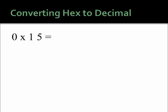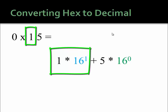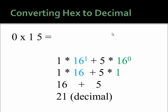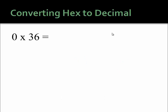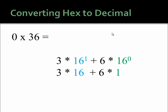Let's try another example. The hex number 15: in the ones place you have five, and in the 16s place you have one. That simplifies to one times 16 plus five times one, which is 16 plus 5, or 21. Let's do one more example. The hex number 36: in the ones place you have six, and in the 16s place you have three. That simplifies to three times 16 plus six times one, which is 48 plus 6, or 54 decimal.